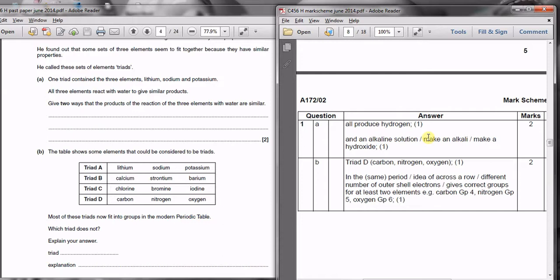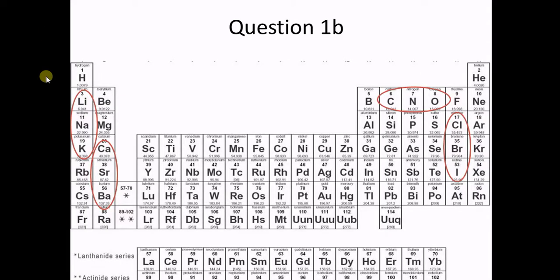For part B it asks you to look at the information about some possible triads and which doesn't fit. We've got four potential triads here. If we look at them on the periodic table we can see that the four triads have been highlighted. Three of those triads run down the groups vertically down columns whereas one of them runs across one of the periods, across a row.